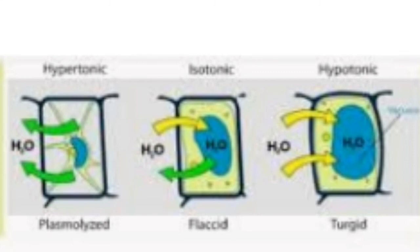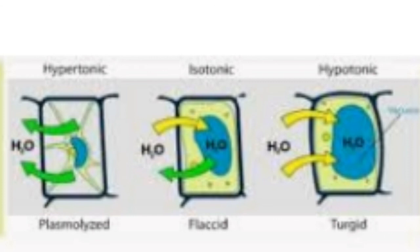In flaccidity, the cell is deprived of its liquid and kept under a highly concentrated solution. Following the rule of osmosis, liquid moves from low concentration to high concentration. As a result, liquid exits the cell, and the cell enters a shrunken condition — this is flaccidity.